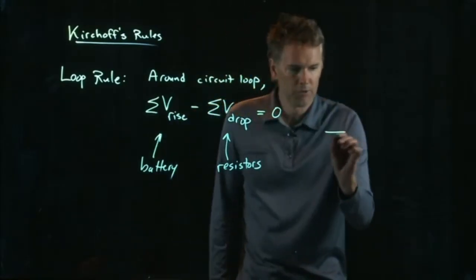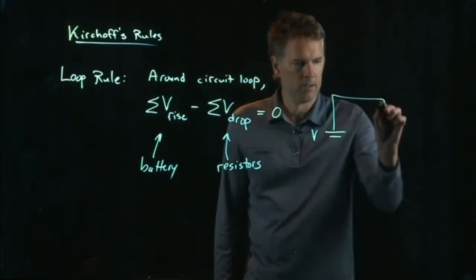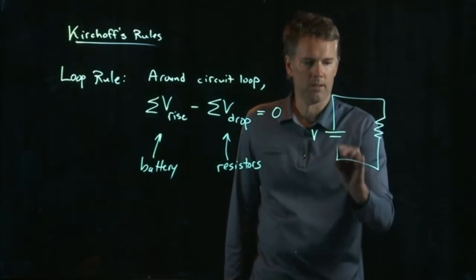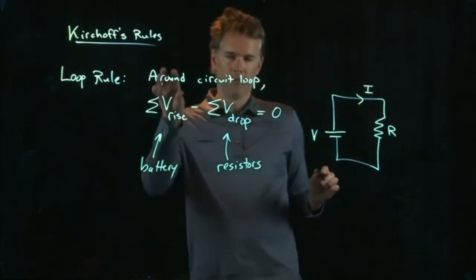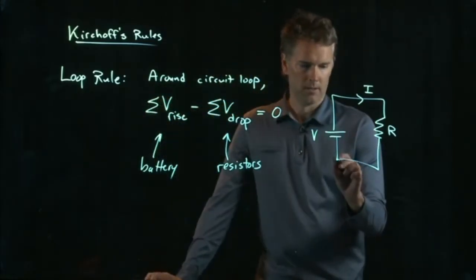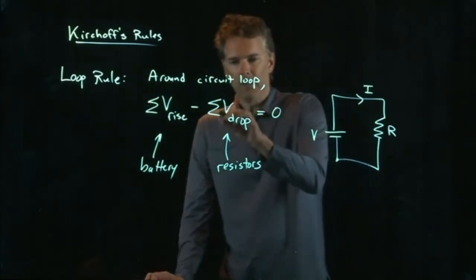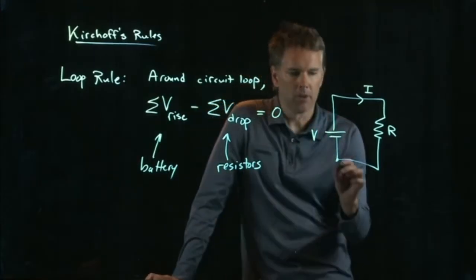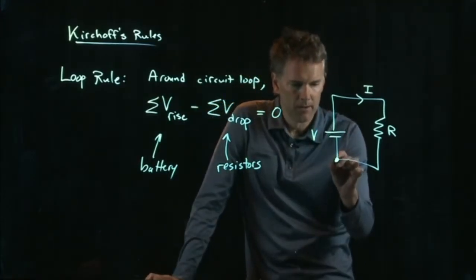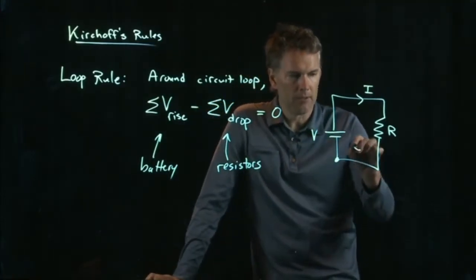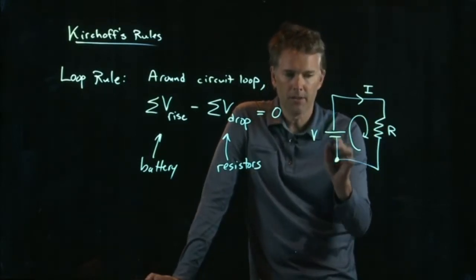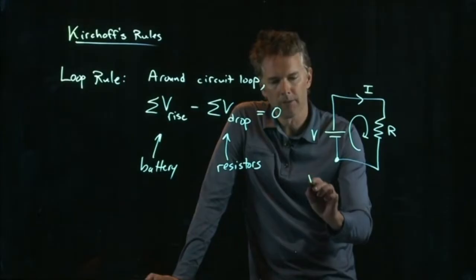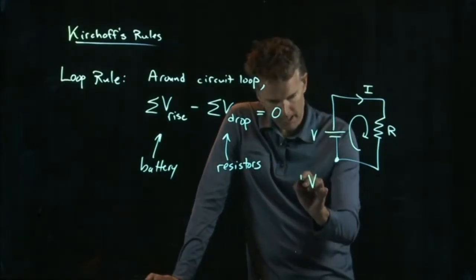So any circuit, what it says is the voltage drops that you rise on minus the ones that you drop on have to be zero. So let's start right here and let's go around the circuit like this. The very first thing I do is I go through a battery, and so I rise. I get plus V.